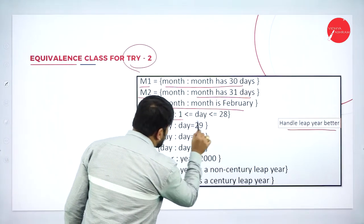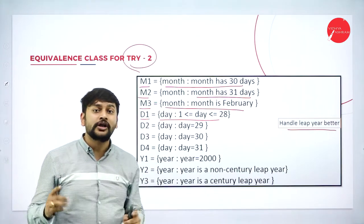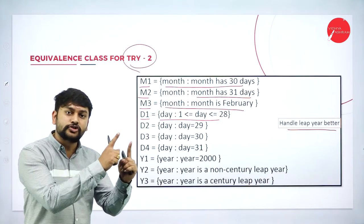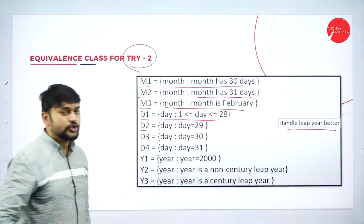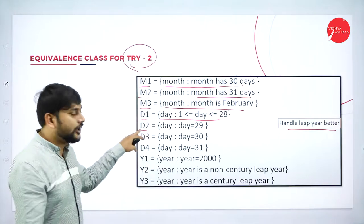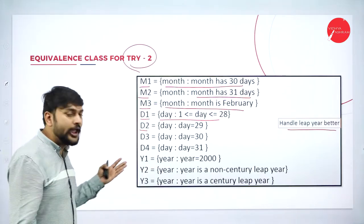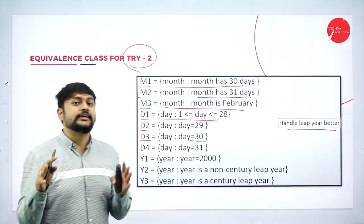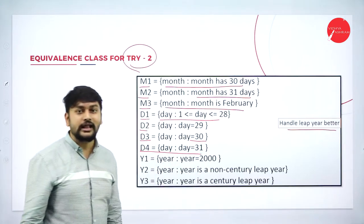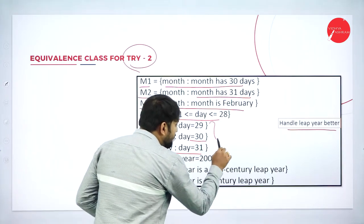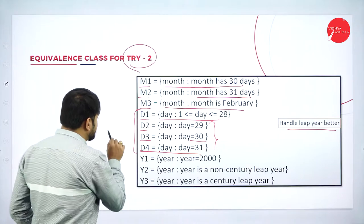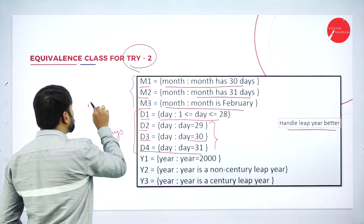For day conditions: D1 is the date range from 1 to 28. D2 is day 29. D3 is day 30. D4 is day 31. So 29, 30, and 31 are stored in D2, D3, and D4 respectively. I have these conditions for days and the conditions for months already described.